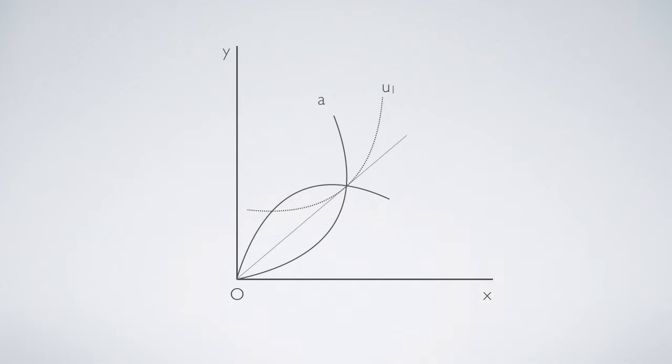If country A can shift its offer curve to A prime, it can attain a higher indifference curve U2.